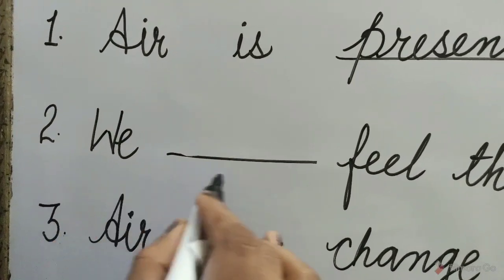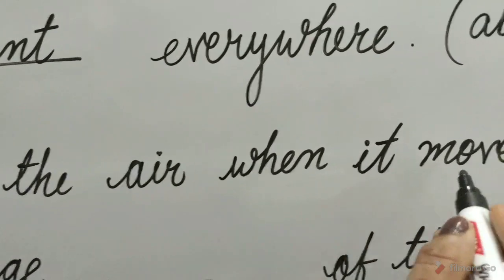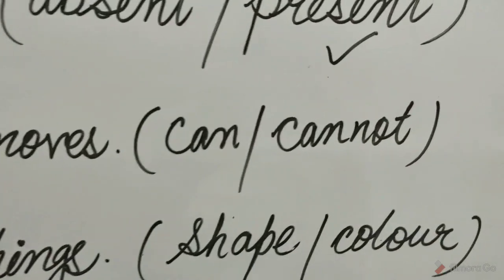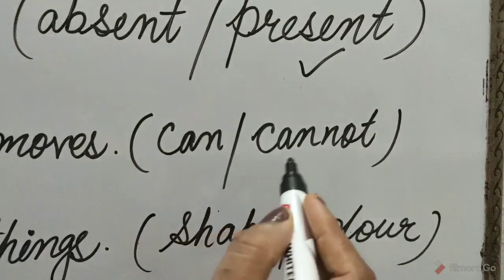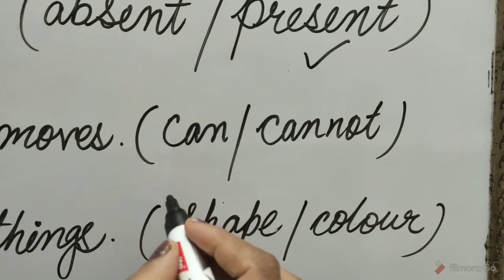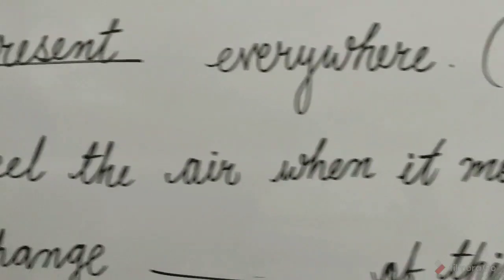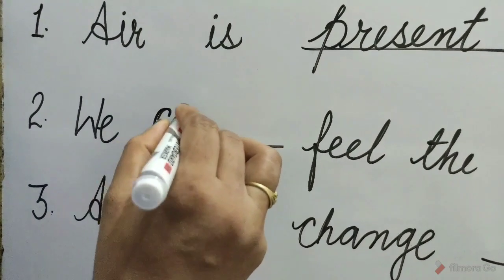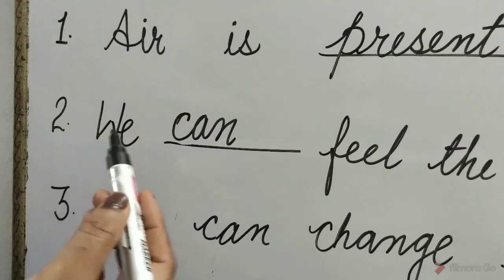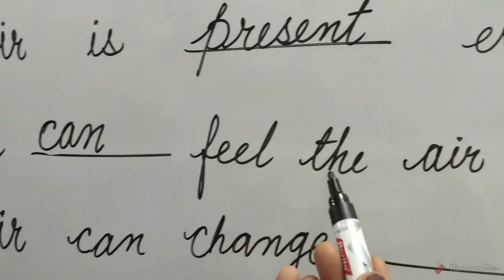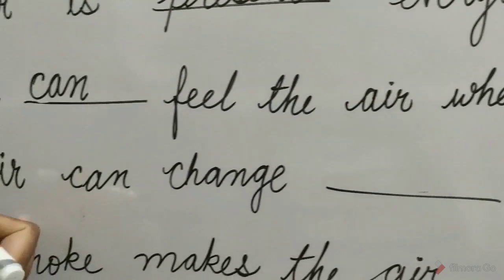Question 2: We dash feel the air when it moves. The options are can or cannot. The can option is correct. So we tick here and write: We can feel the air when it moves.